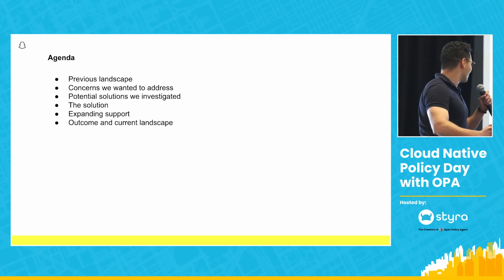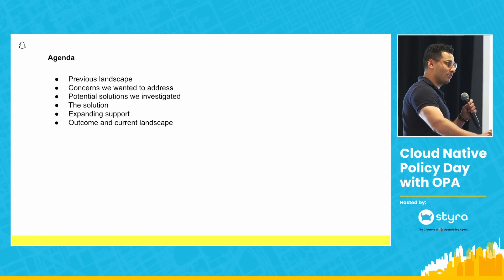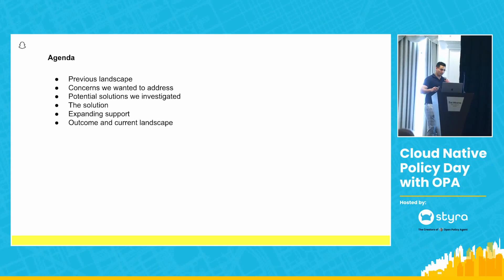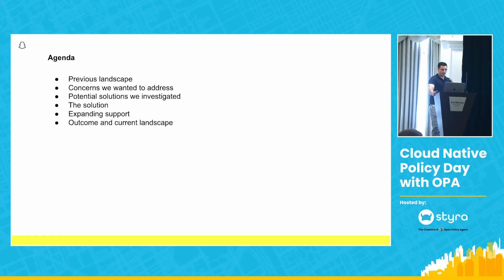To start off, I want to talk about the agenda. We're going to look at what the previous landscape of internal AuthZ at Snap looked like, then the concerns we wanted to address, the potential solutions we investigated, the solution we ended up going with, expanding support for that solution to service other services, and finally the outcome and the current landscape.